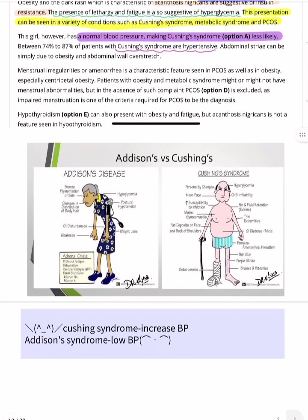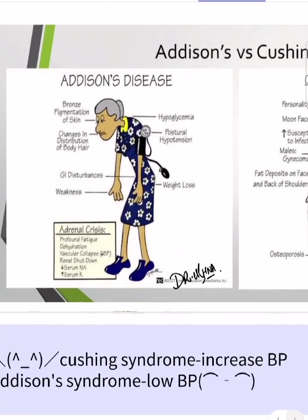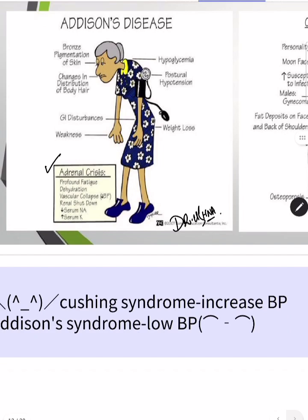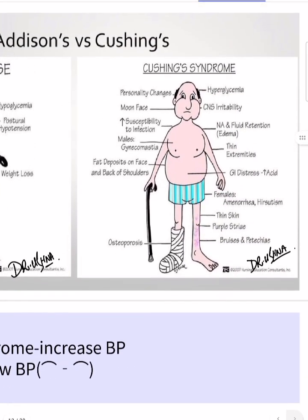Addison's disease presents with bronze-like pigmentation, lethargy due to hypoglycemia, postural hypotension, weight loss, GI disturbances, and weakness. In Addison's crisis, there is profound fatigue, dehydration, vascular collapse due to decreased blood pressure, renal shutdown, and metabolic derangement in the form of hyponatremia and hyperkalemia.